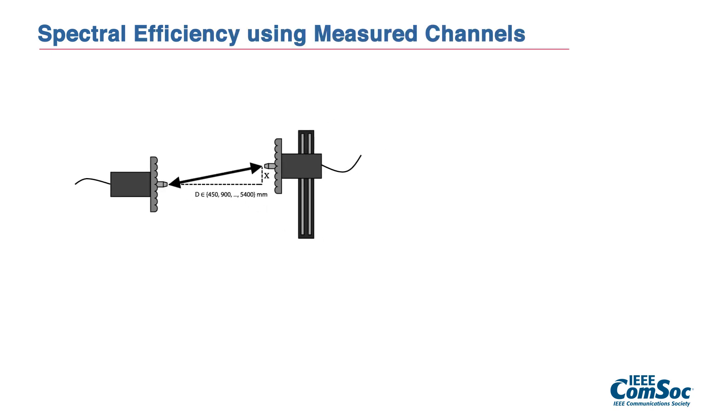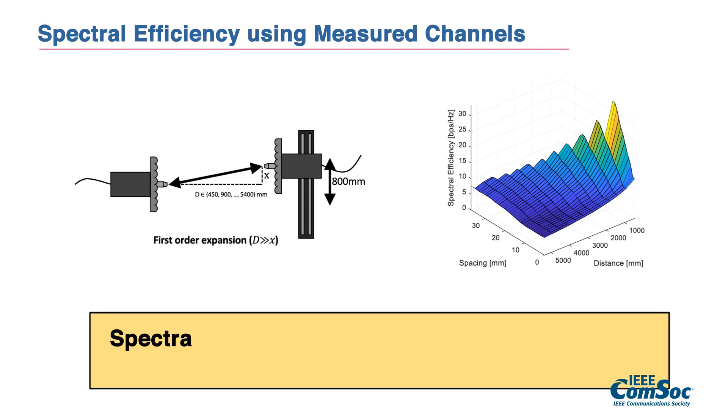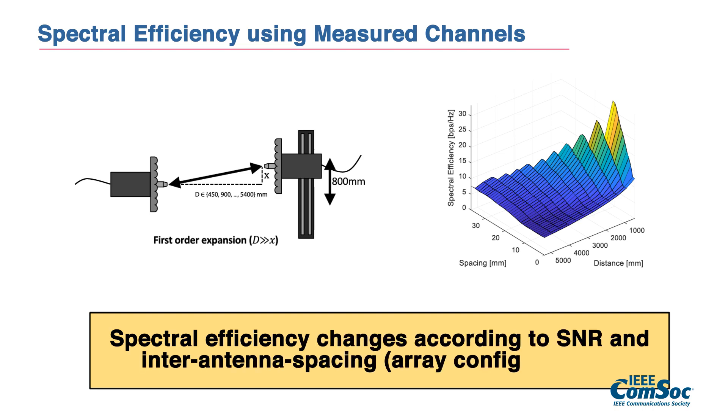To validate our claim, we performed a measurement campaign at 300 GHz frequency band and verified that this spherical wavefront model is exact. Using the measured channels, we evaluated the spectral efficiency according to the link distance and the inter-antenna spacing of a virtual array we constructed.